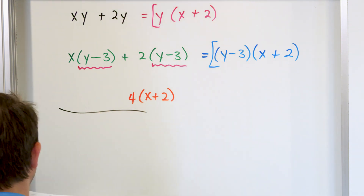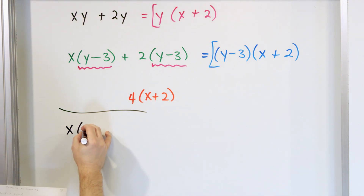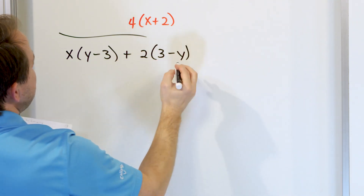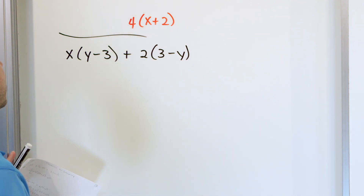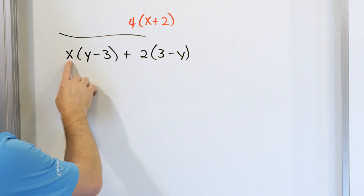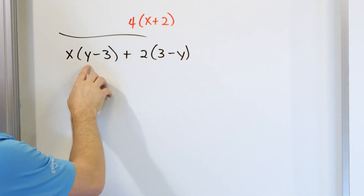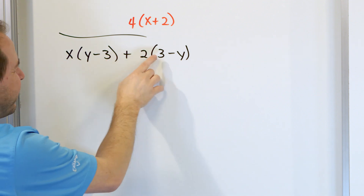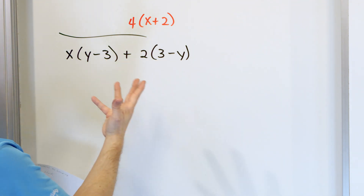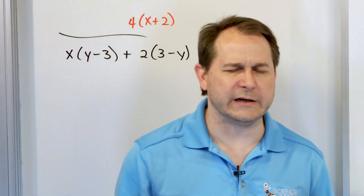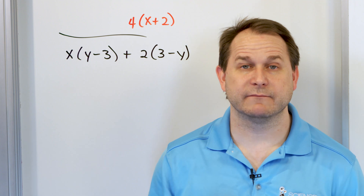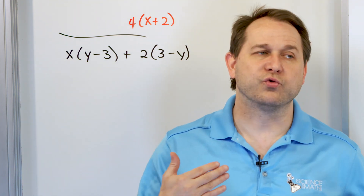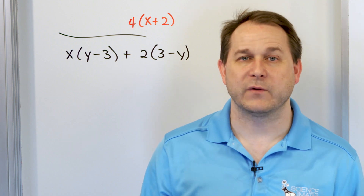Let's do another one. What if we have x times y minus 3, plus 2 times 3 minus y? Factor that. Well, first you think there's nothing you can do — x is only in the first term, y minus 3 appears in the first term but not the second, and there's no common numerical factor. Here's the secret of algebra and all math and physics and chemistry beyond this point: what you've learned up to now are the rules, what is legal to do.